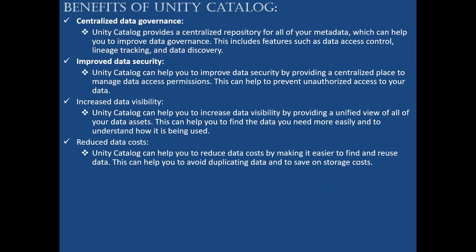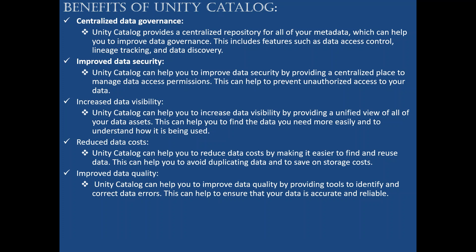Reduce data cost: Unity Catalog can help you reduce data cost by making it easier to find and reuse data, avoiding duplication and saving on storage cost. Even though cloud storage is relatively low cost, maintaining separate copies of data for each workspace increases storage costs. By maintaining everything through Unity Catalog, data cost is reduced.